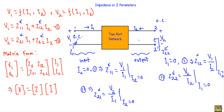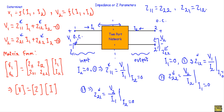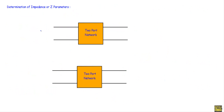For a reciprocal and symmetrical network — symmetrical meaning both halves of the network are identical — Z11 will equal Z22 and Z21 will equal Z12. Now I will show you how to determine the impedance parameters of a two-port network.